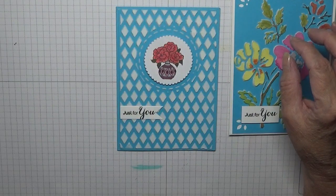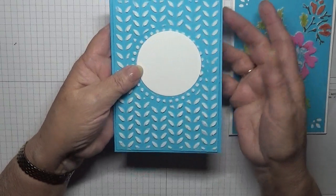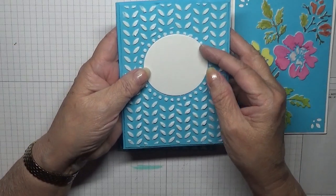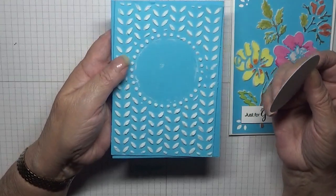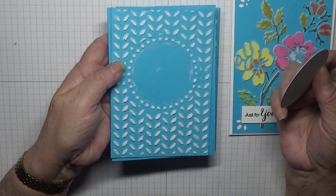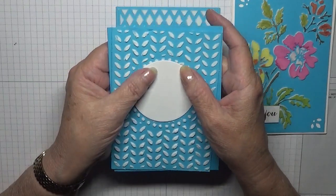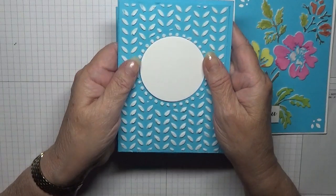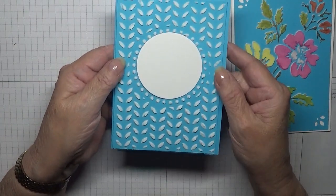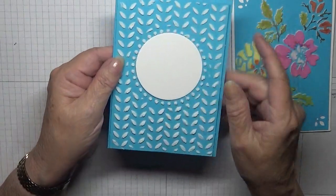And so today I've already embossed it because obviously it's got to be dry for me to finish the card. I have done this one. And I'm going to put a stamped image on there which will go inside the circle. Which was also one of her paper cutouts.